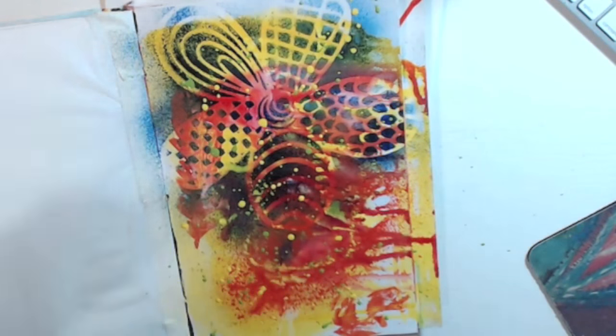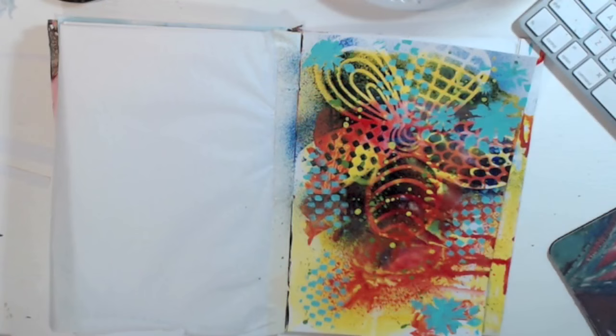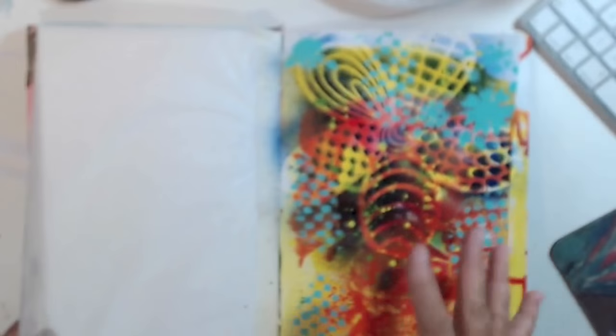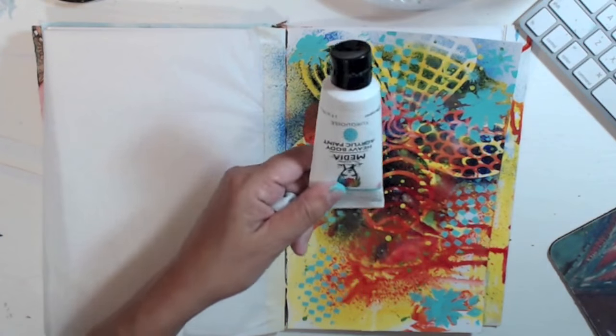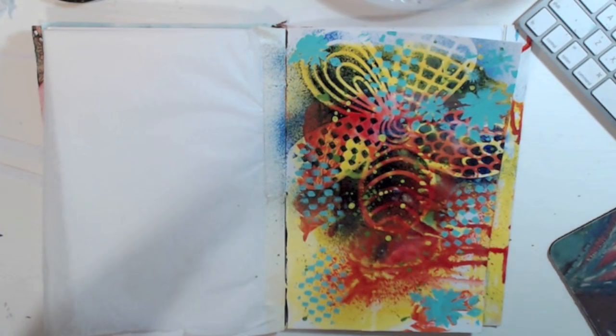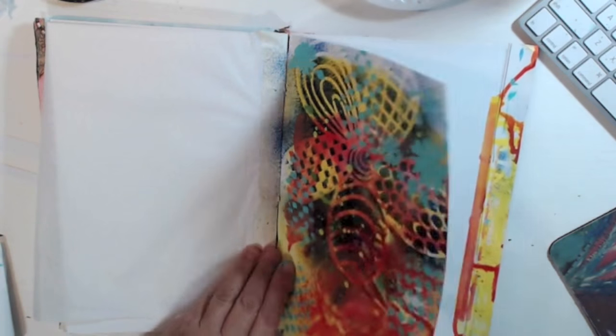I used some stencils and put in some turquoise. It's the Dina Wakeley heavy body. I like it because she's got really vibrant colors and it's opaque, so sometimes you just need something opaque and they're great.